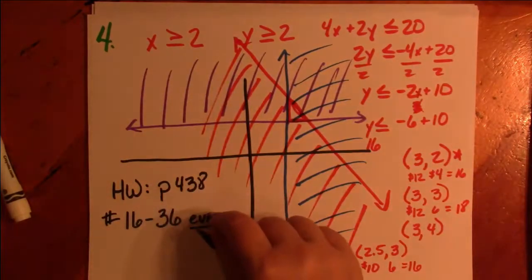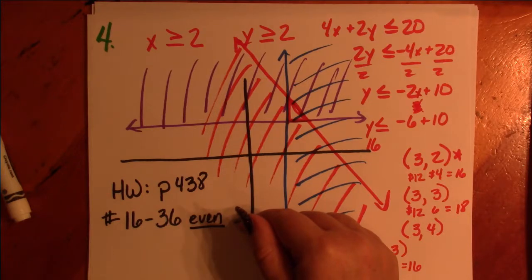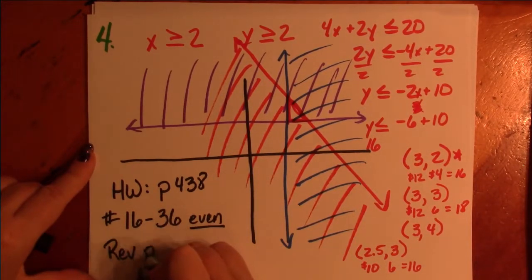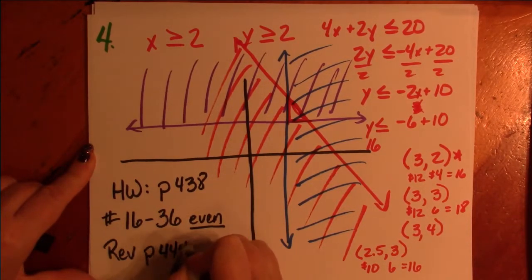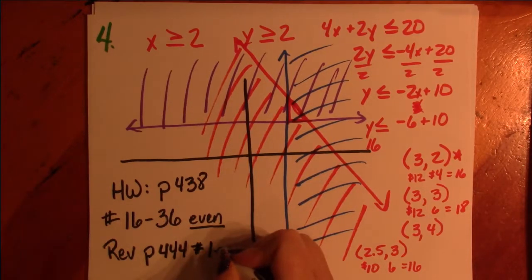So for homework tonight, I'm going to ask you to start on page 438. You're going to do numbers 16 through 38 even. After this, we've got review. And the review starts on page 444. And you're going to do all of them, numbers 1 through 60.